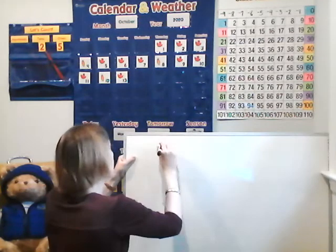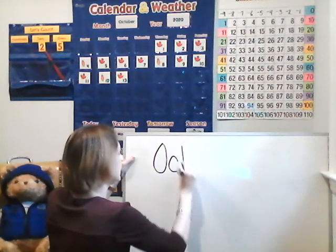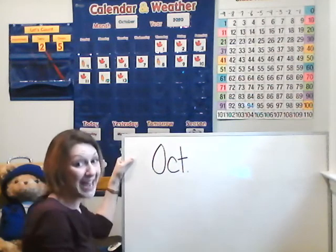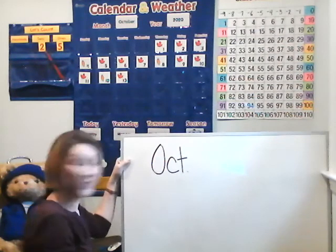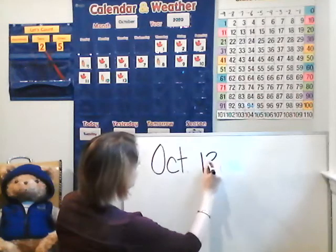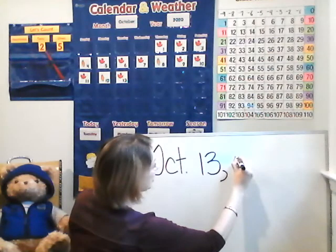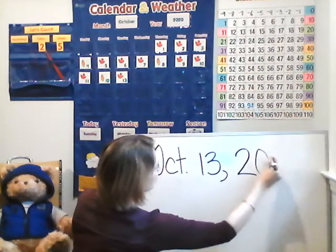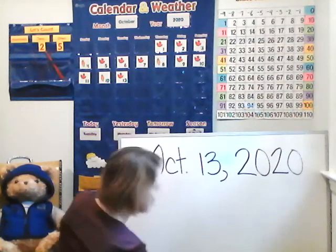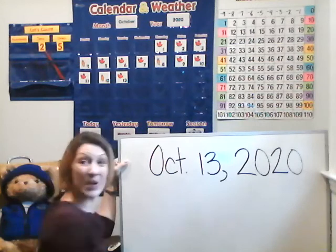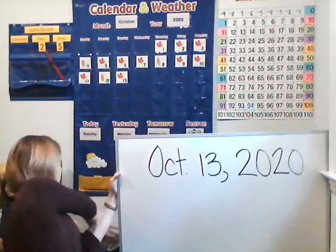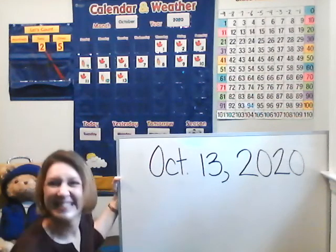Let's go ahead and quickly write the date down. You need something to write on and something to write with. Start with your capital O. O, C, T, period for October. Now you're going to have to do the number 13 — pull straight down for your one, then curve, curve for your three. Make your comma. Then for your 2020, start at the top. Read it with me: October 13, 2020. Great job. Let's go ahead and continue math — today, boys and girls, we're going to be learning about numbers.